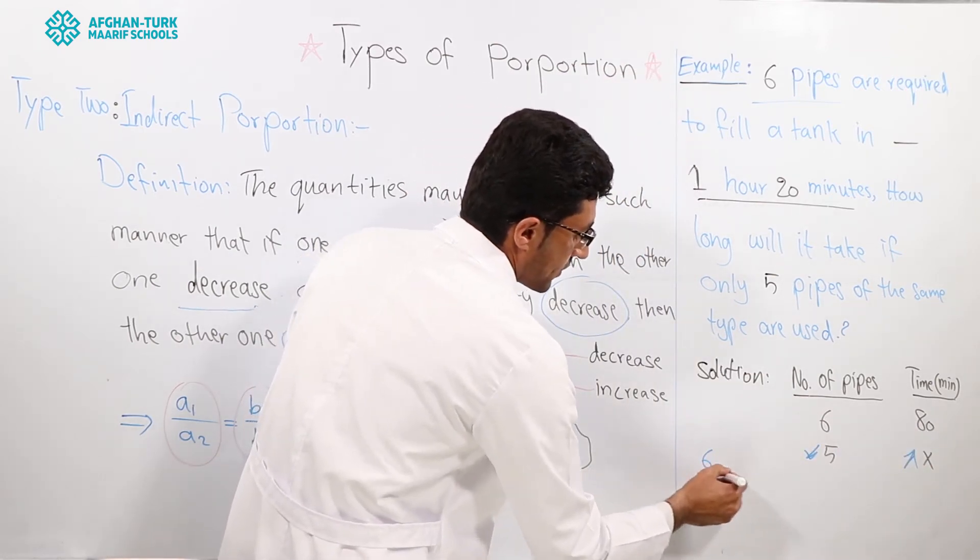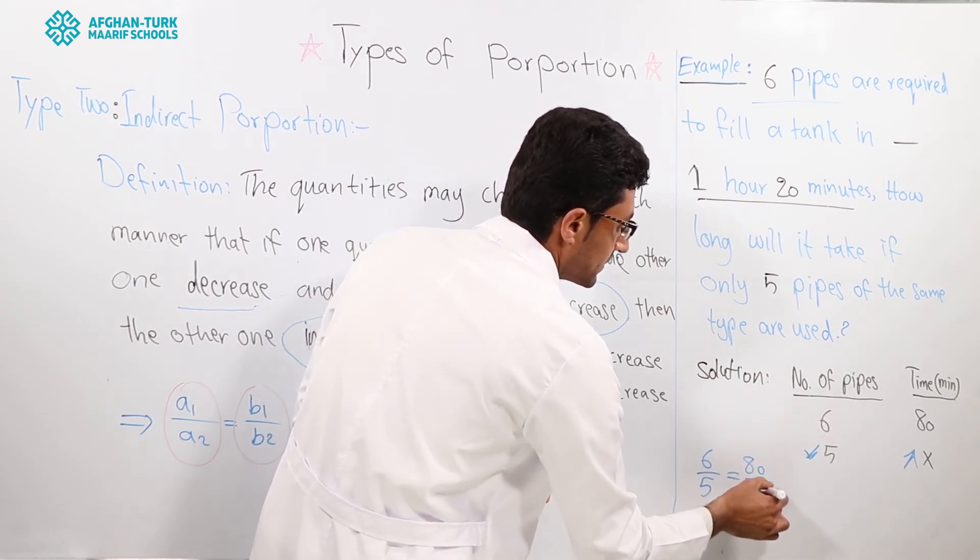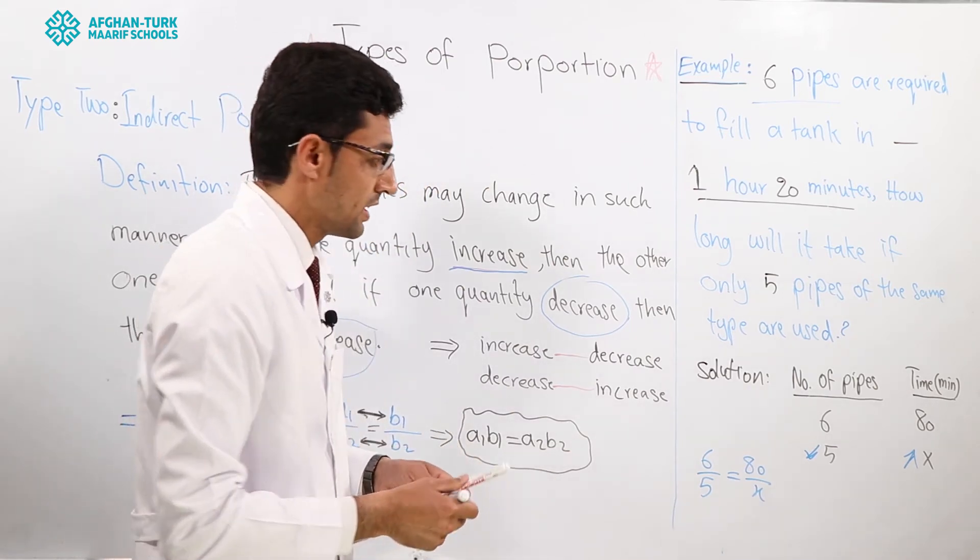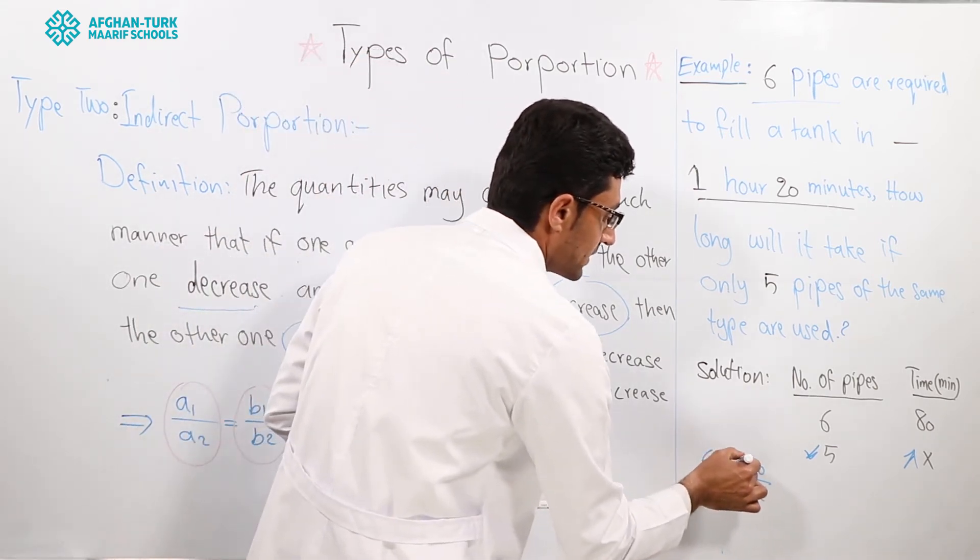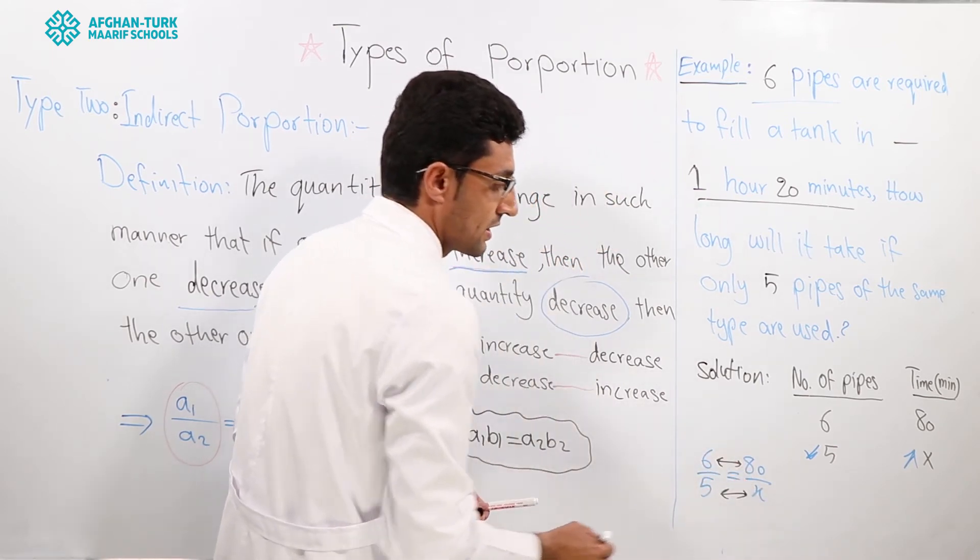Six over five is equal to eighty over x. Because now we know that it is indirect proportion, I have to multiply numerator with each other and denominator with each other.